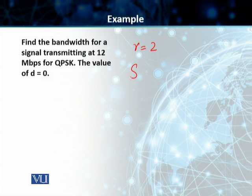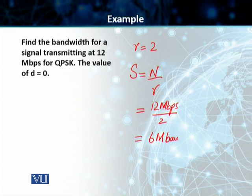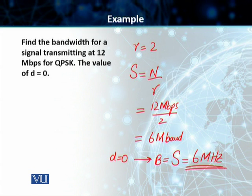Now, the signal rate, or the baud rate, is N divided by r, and that comes out to be 12 megabits per second divided by 2, which is equal to 6 megabaud. And if our d is equal to 0 now, then we can see that our bandwidth is equal to S, which is equal to 6 megahertz in this particular case.